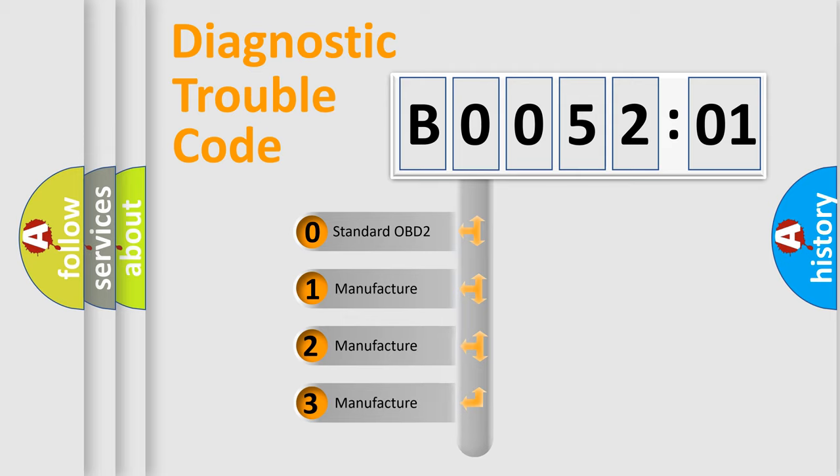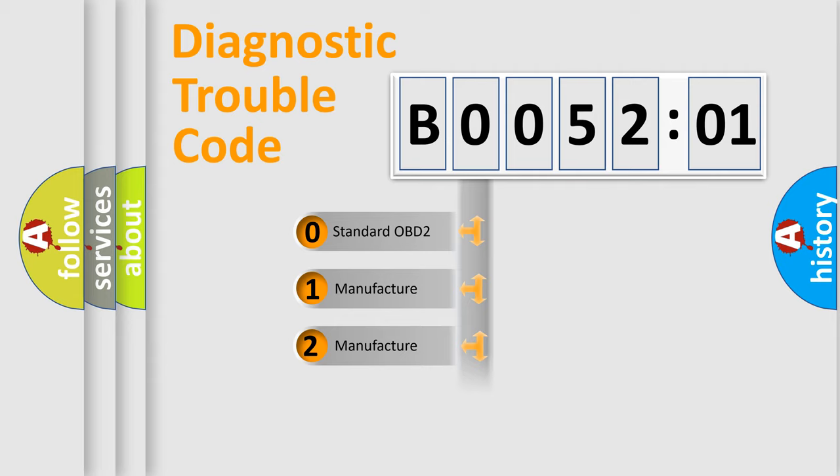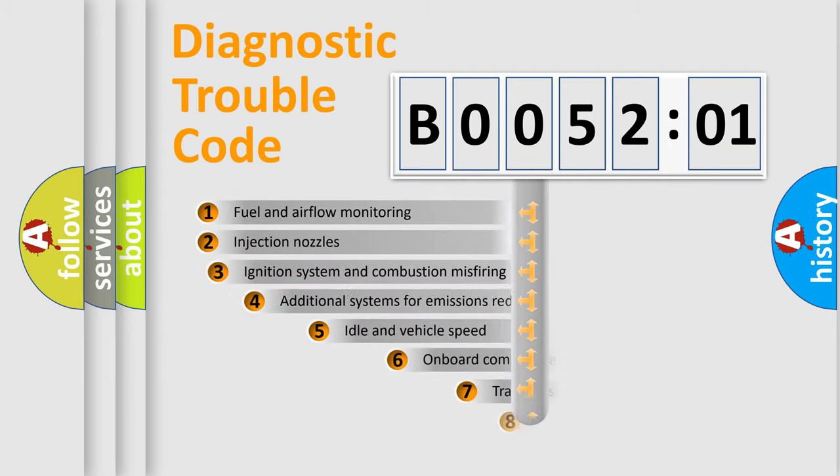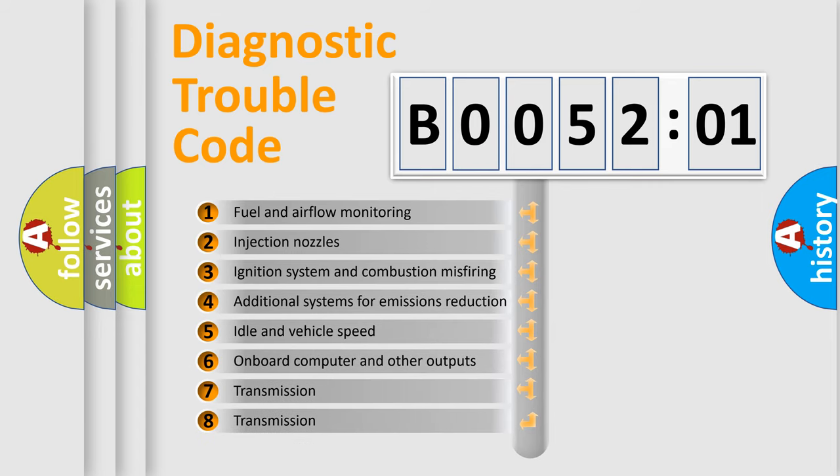If the second character is expressed as zero, it is a standardized error. In the case of numbers 1, 2, 3, it is a more prestigious expression of the car-specific error. The third character specifies a subset of errors.